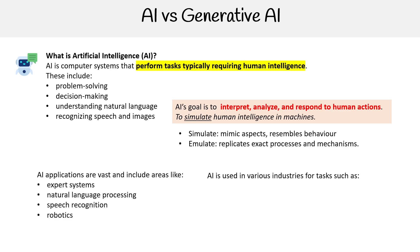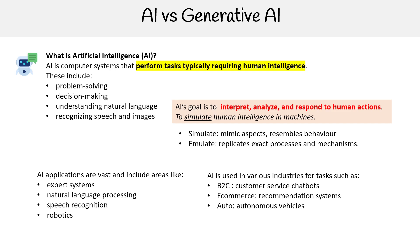For industries, it's across the board. In B2C, everyone has probably experienced a customer service chatbot — that is probably the number one use for general AI. We also have e-commerce recommendation systems, like Amazon using AI in ways you might not even be aware of. And there's autonomous driving vehicles, medical diagnostics — lots of verticals across different industries.